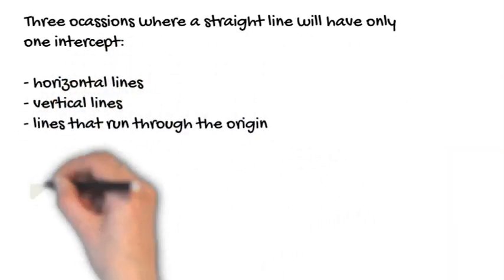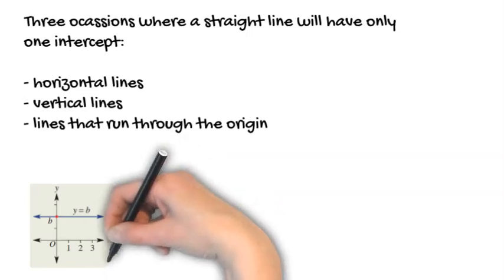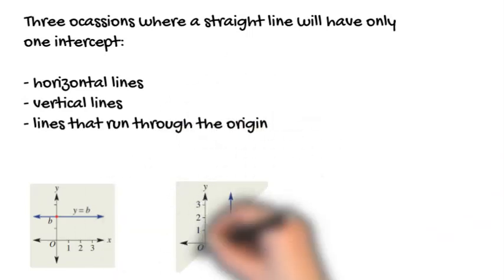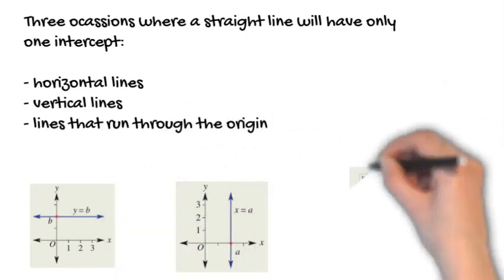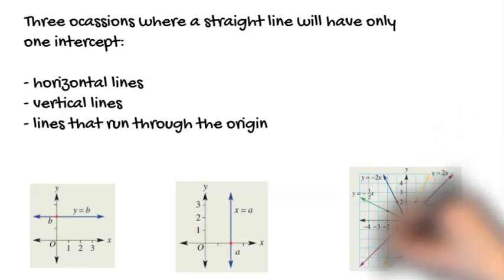This is where our line is horizontal, vertical, or runs through the origin. You can see these graphs only cross the axis at one point.